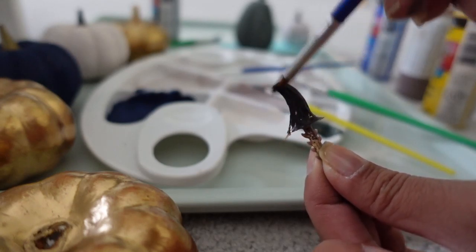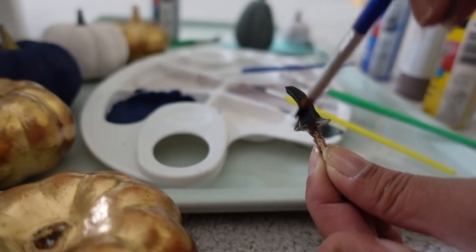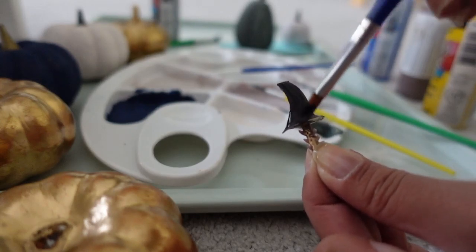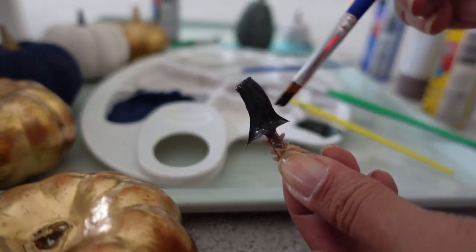This is a nice quick easy hack for those of you that don't want to paint the entire pumpkin and make a mess. You can just paint the stem and change the total look of the pumpkin.